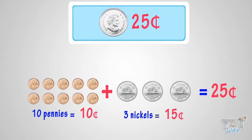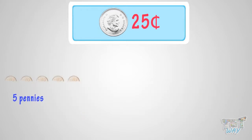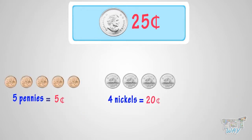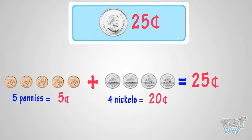So we can exchange this set of coins too for a quarter. Another way: 5 pennies and 4 nickels. As 5 pennies make 5 cents, and 4 nickels make 20 cents, so in total we will have 25 cents. So we can exchange this set of coins too for a quarter.